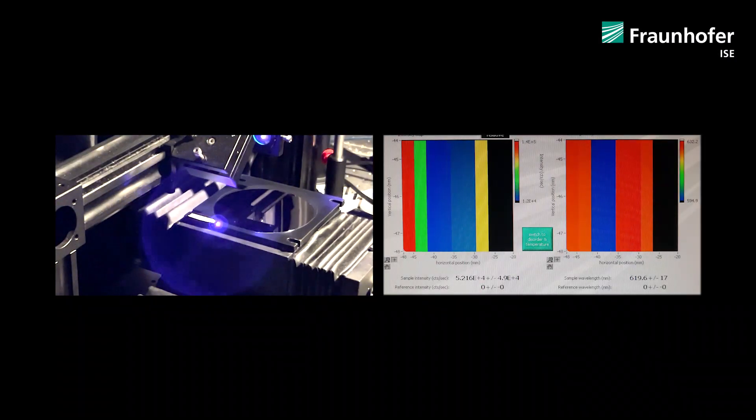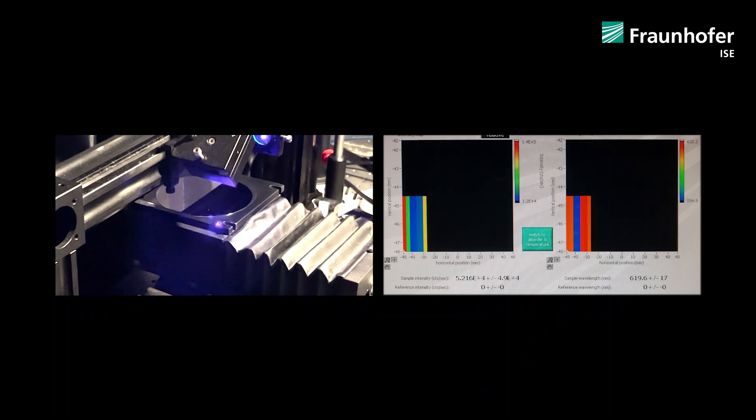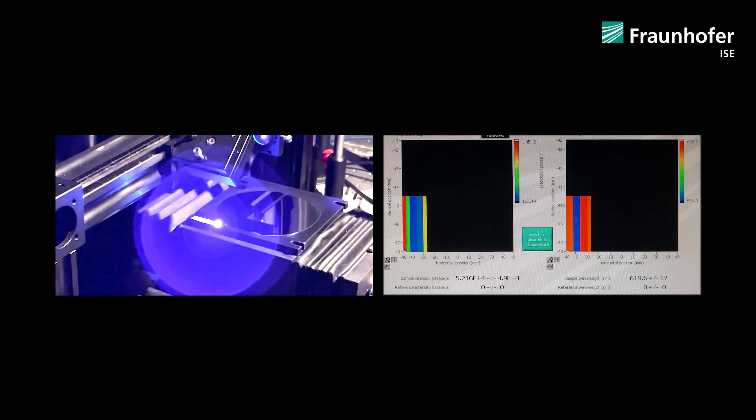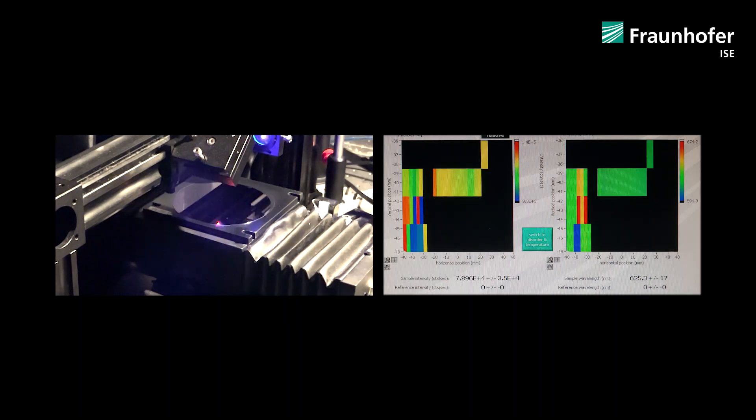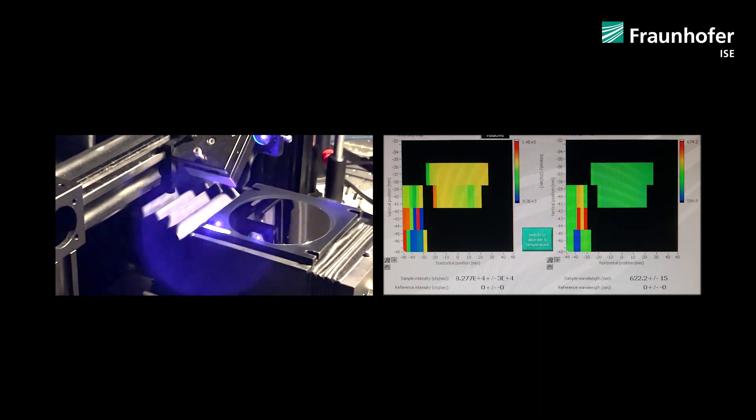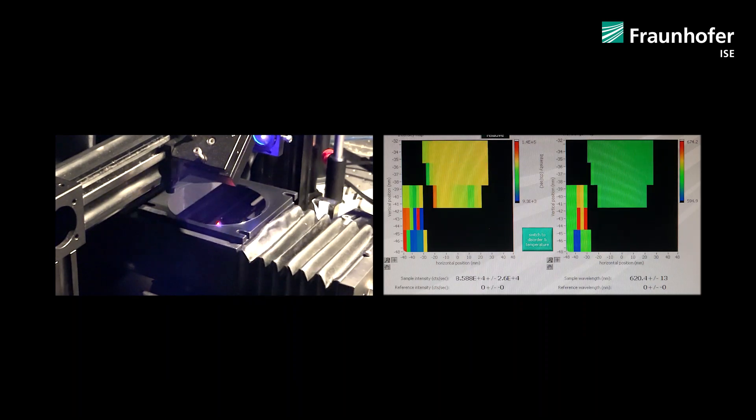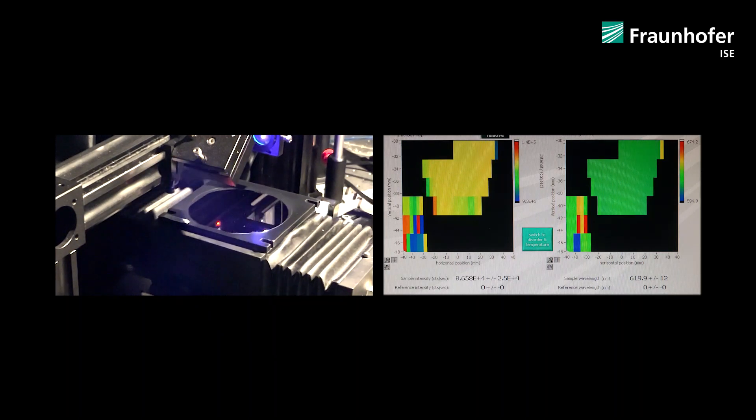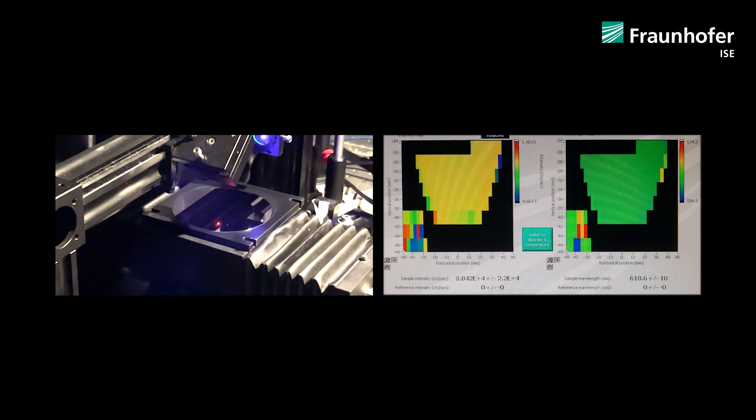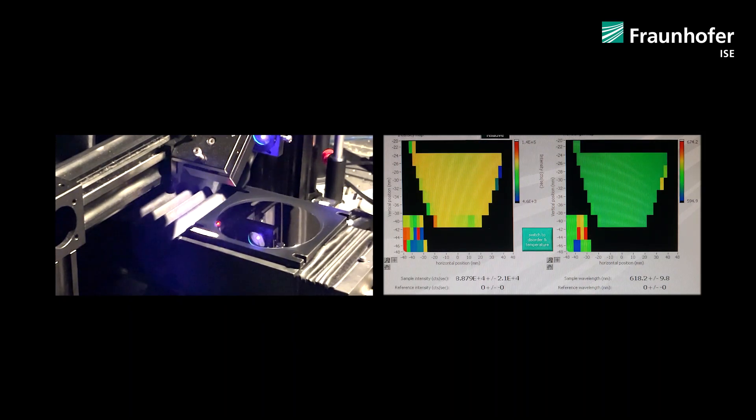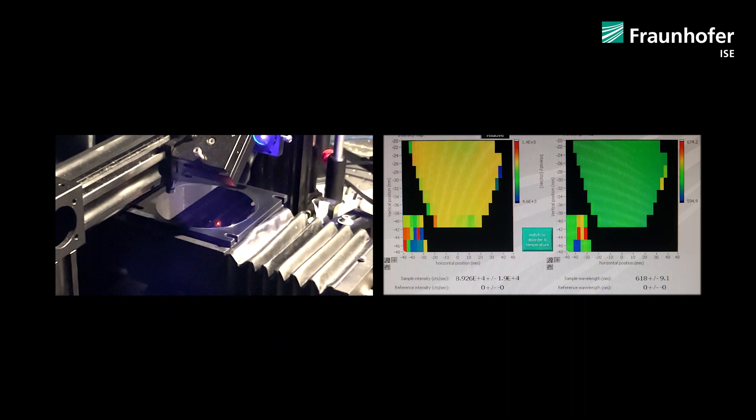Here we are in our laboratory for photoluminescence spectroscopy. With this setup we can determine the band gap of our 3-5 semiconductor materials. To this end we use a laser with a very short wavelength, in this case blue light. The laser light excites charge carriers in the sample which then can recombine again under the emission of a photon whose wavelength is given by the band gap of the material.